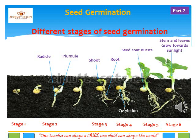Stage 5: the shoot and root develop and the seed coat bursts. Stage 6: the stem and its leaves grow into a new plant.